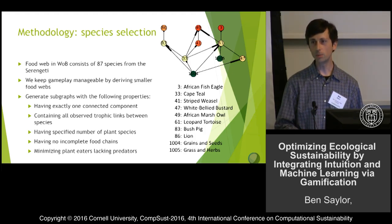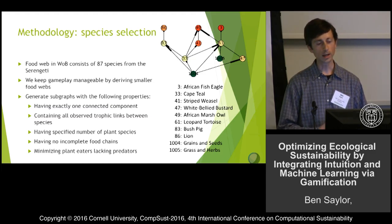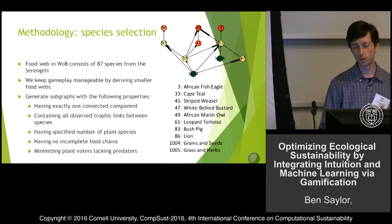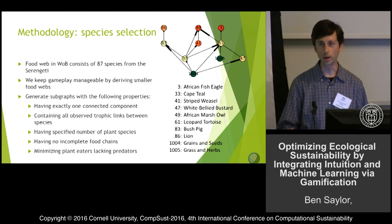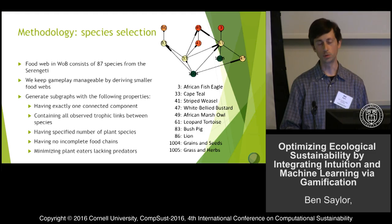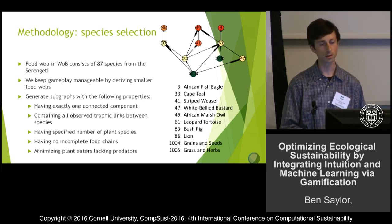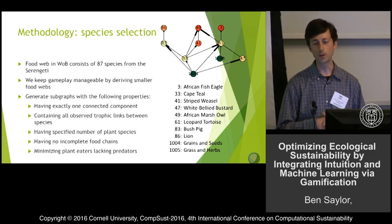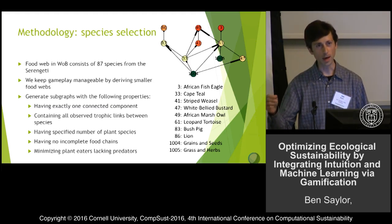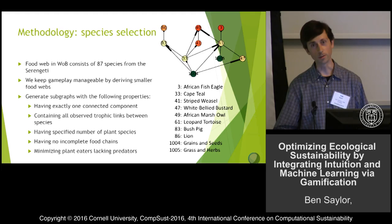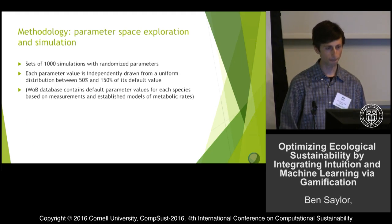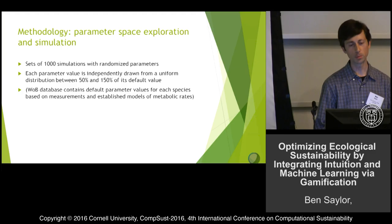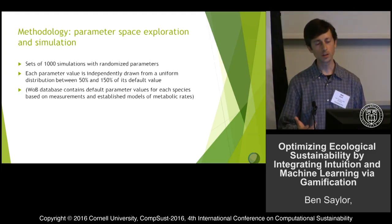The full food web of the Serengeti species in the World of Balance game has 87 species — that would be a lot of sliders to tweak. So we try to keep it manageable by deriving smaller food webs using a graph sampling algorithm that generates subgraphs with specific properties: one connected component, all observed trophic links between species, a specified number of plant species, no incomplete food chains (meaning every species has a path down to a plant, otherwise it would starve), and minimizing plant eaters lacking predators, which increases stability.